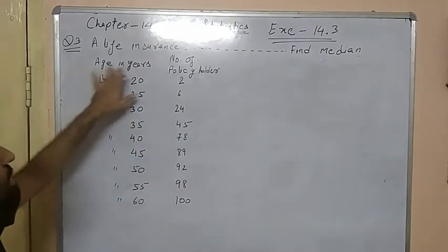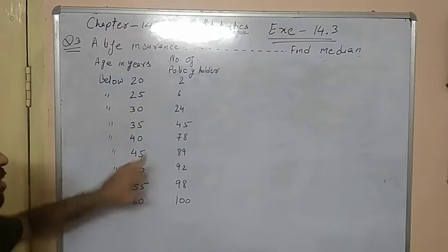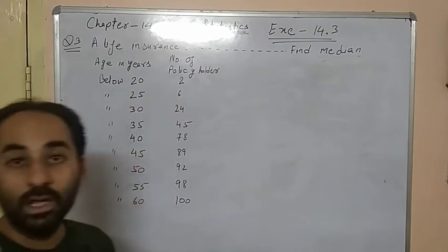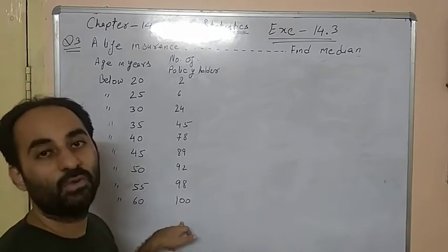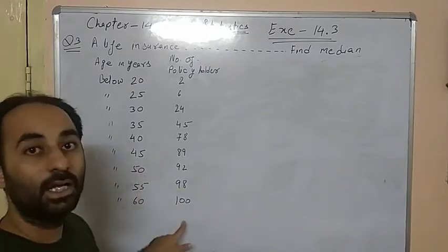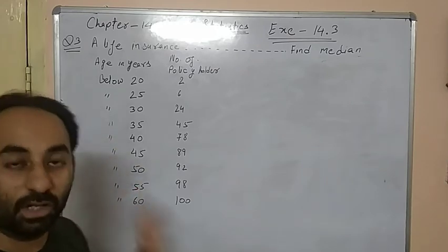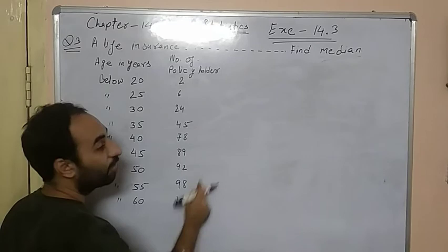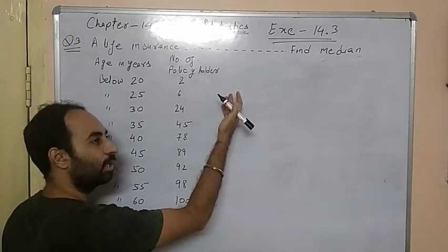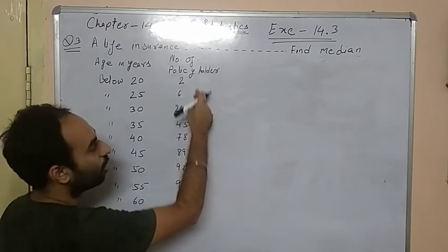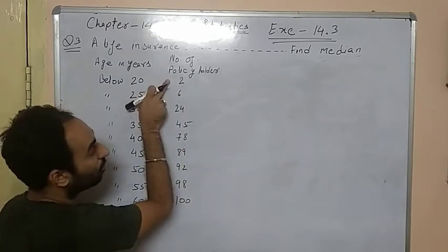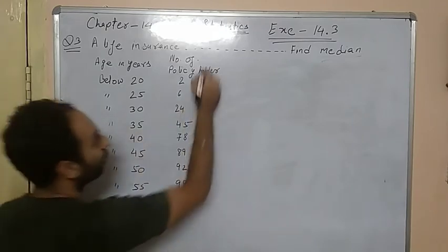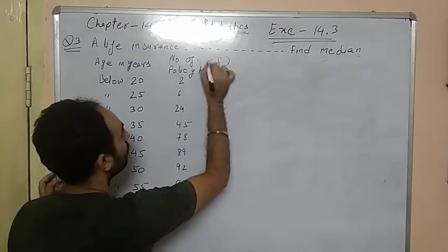In this question, it is given age in years: below 20, below 25, below 30, below 35, below 40, etc. Every time in the question, frequency is given. But here, directly cumulative frequency is given — frequency is not given here. How do we know it is cumulative frequency? Because here the numbers are in increasing order. In frequency, the numbers are mixed — big, then small, then big. But in cumulative frequency (CF), the numbers go from minimum to maximum. So this is cumulative frequency.